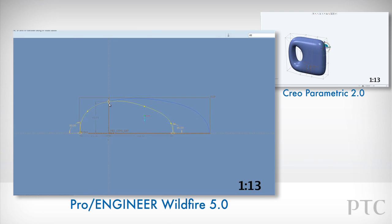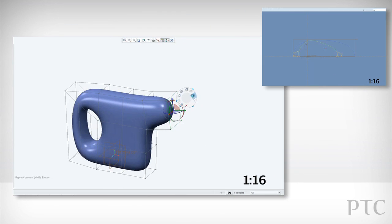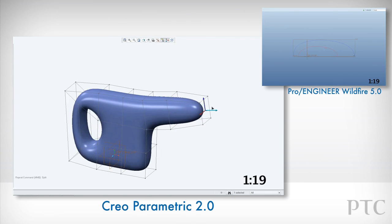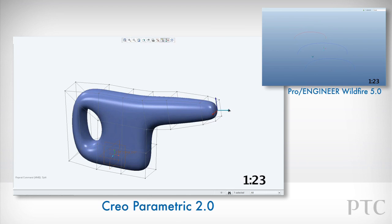With Pro Engineer, creating and editing these shapes would also be difficult. Back in Creo Parametric, we're going to create the neck of the watering can. We can add geometry and then use the split command to add finer control on the way.